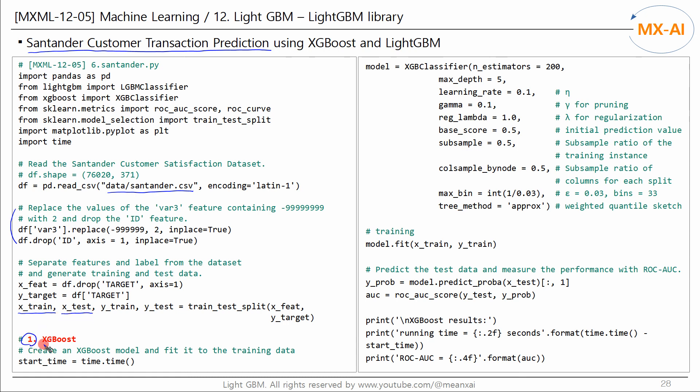First, let's analyze it using XGBoost. Set the number of boosting to 200 and set the parameters as follows. As shown in the XGBoost video. Set the tree method parameter to approx, which is the weighted quantile sketch. Fit this model to the training data. Then predict the test data and measure the ROC AUC score. And let's check the result.